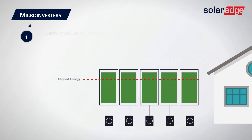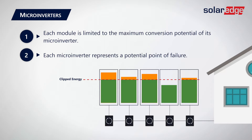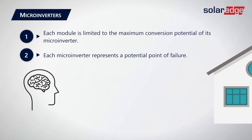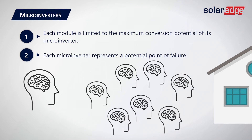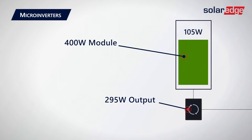There are a couple of challenges, though. Number one, each module is limited to the maximum conversion potential of that microinverter, meaning a module will never actually reach its full potential output, even if it really wanted to. And number two, each microinverter represents a potential point of failure. Inverters are really the brains of the solar system — would you rather have one brain to rely on or juggle multiple brains? So we're really dealing with multiple critical components and multiple potential points of failure. For example, a 400-watt module commonly paired with a microinverter only capable of 295-watt output means you're losing up to 105 watts of output every time, with every conversion.